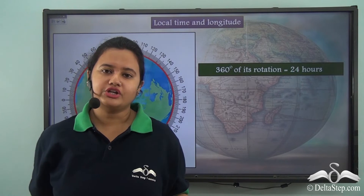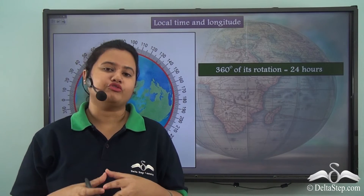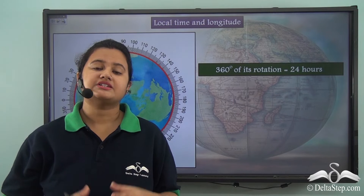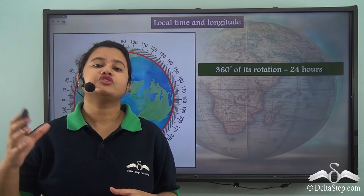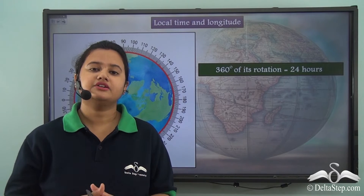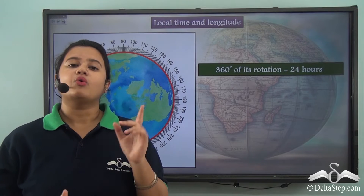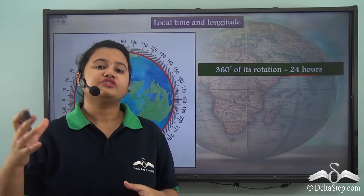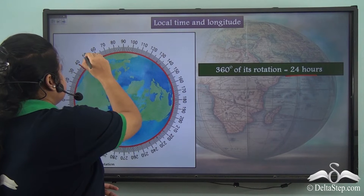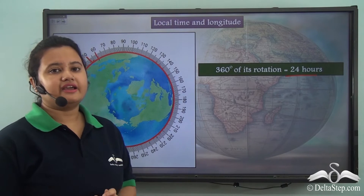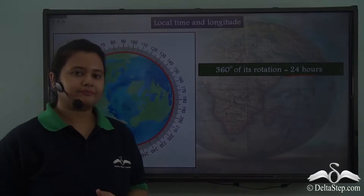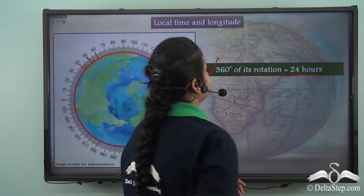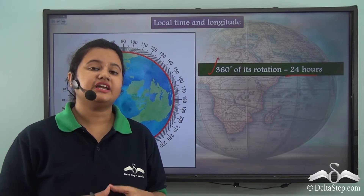Longitude helps us to determine the local time of a place. We shall now calculate how much is the difference between local times of two consecutive longitudes. We know that the earth rotates in 24 hours on its axis, so one rotation equals 24 hours. Also, we know that there are 360 lines of longitudes. So, 360 degrees of earth's rotation takes 24 hours — or the earth turns 360 degrees in 24 hours.